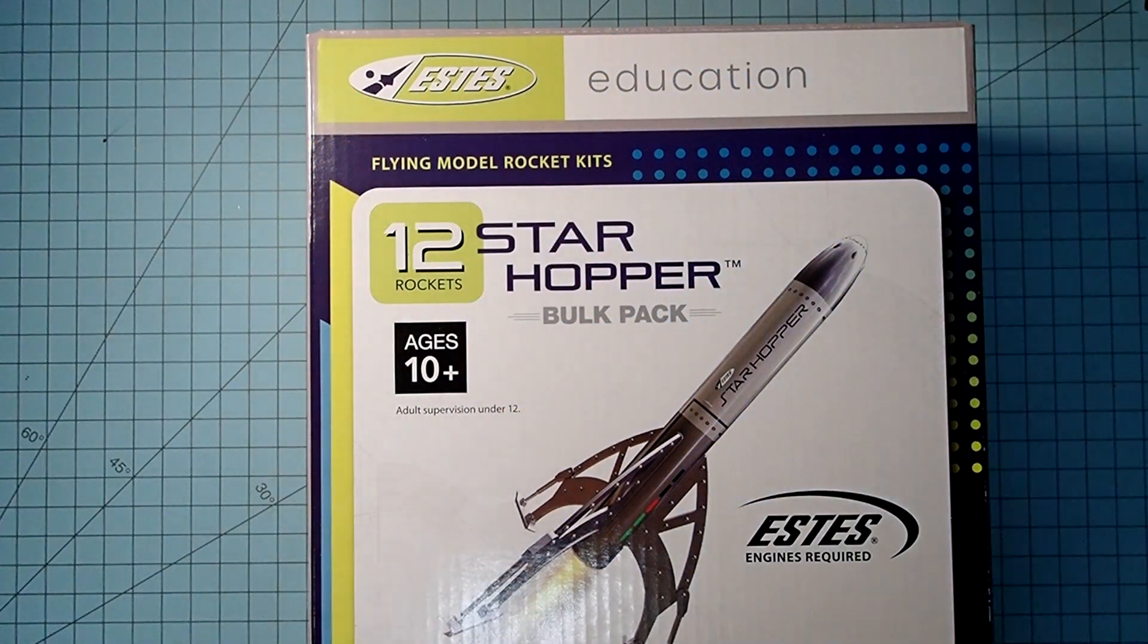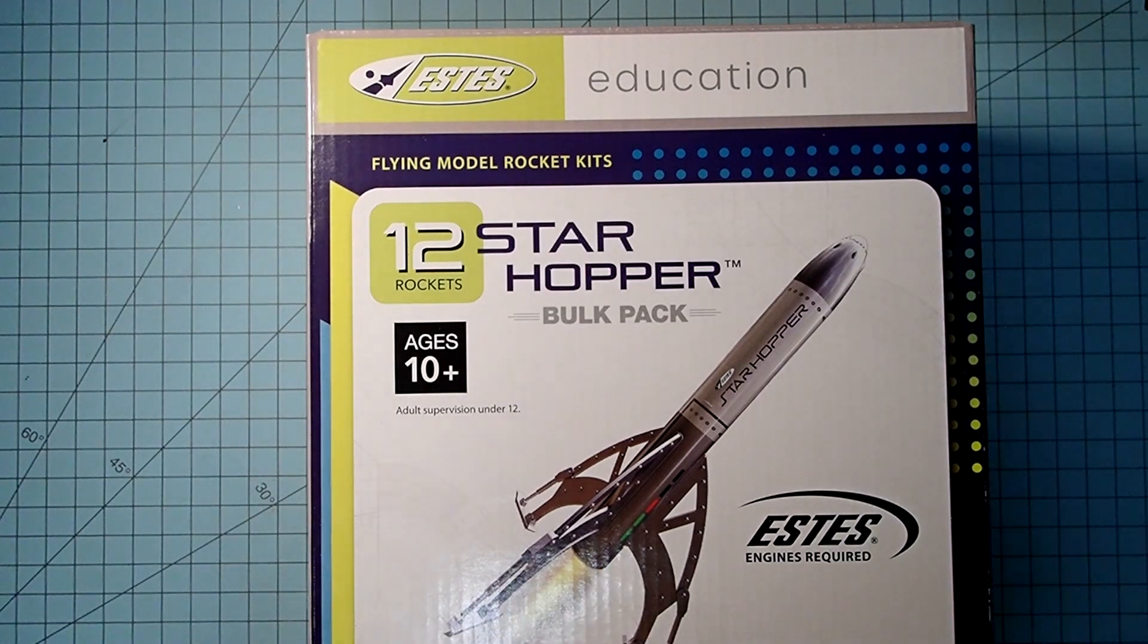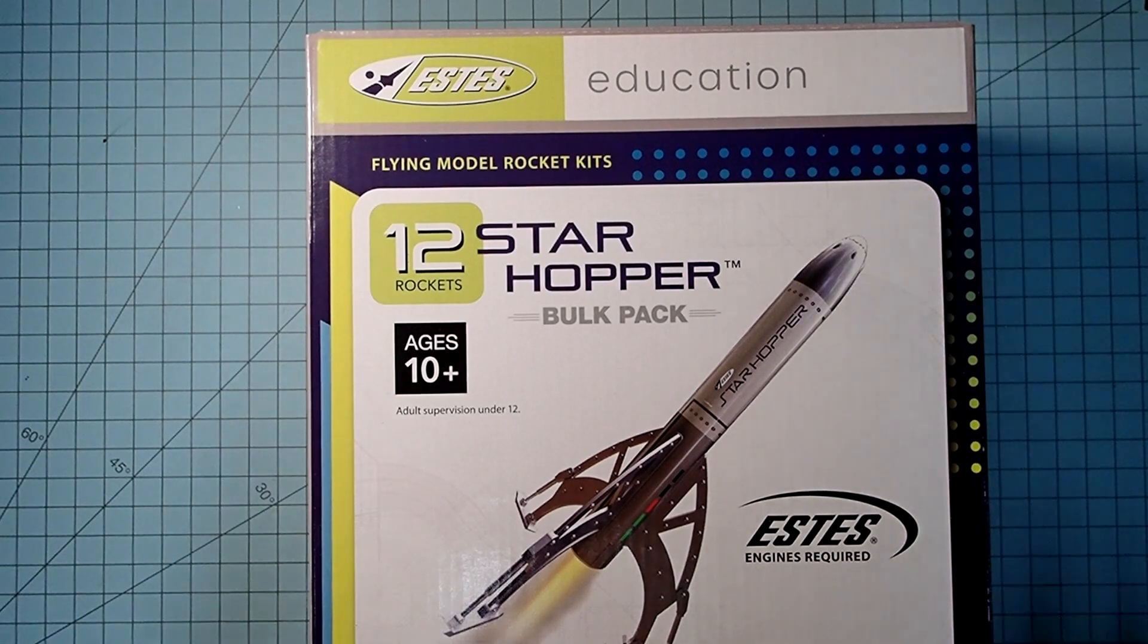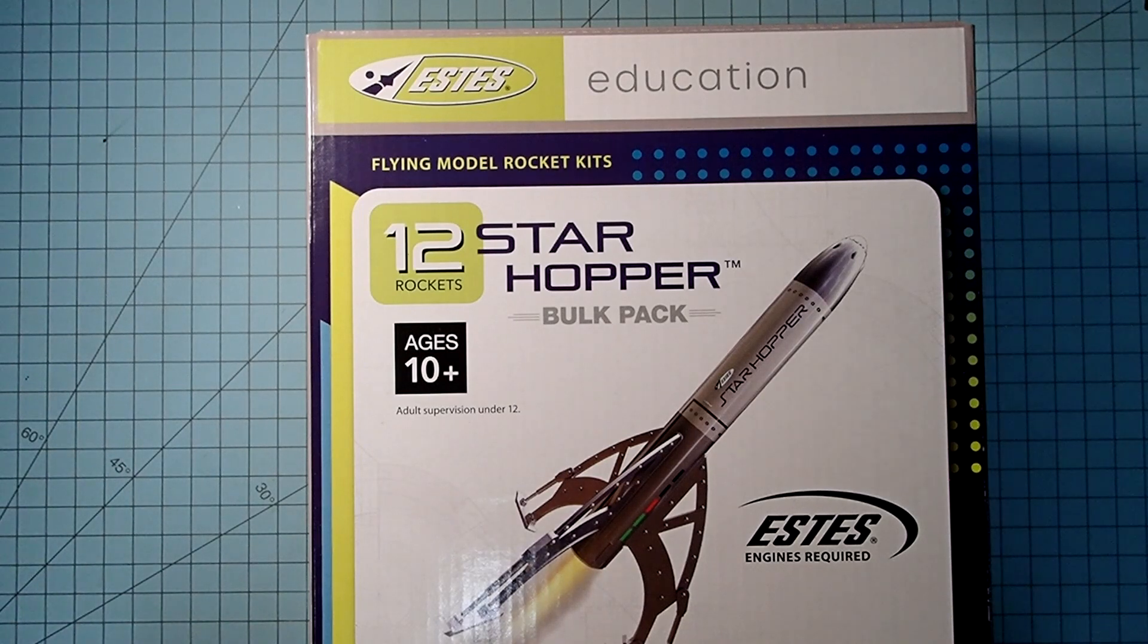Hello again everyone, I'm Dave Thomas and today I am building the Estes Starhopper. This is a snap-together model, requires no glue and it's available as either a single kit or in the 12 kit education pack here. I've got the education pack and really the only difference is that when you look inside each individual package they don't have the front cover art on it like the box does.